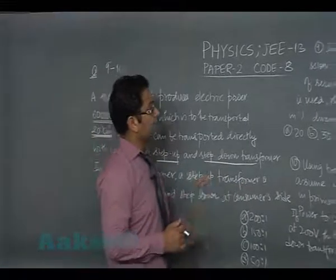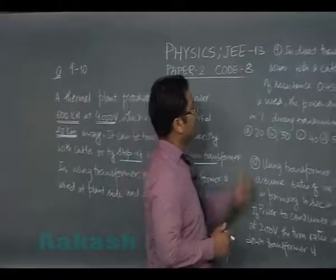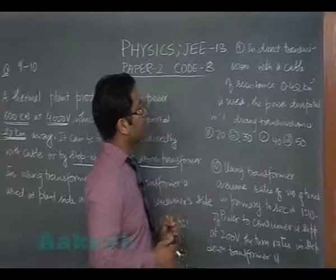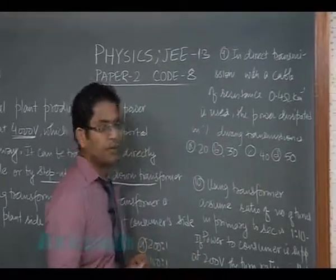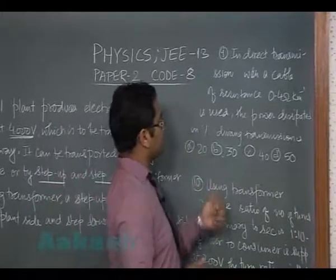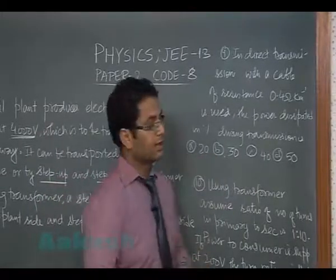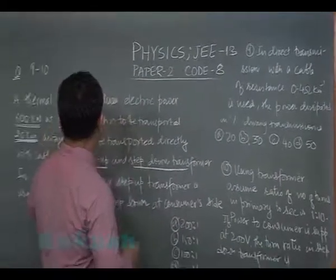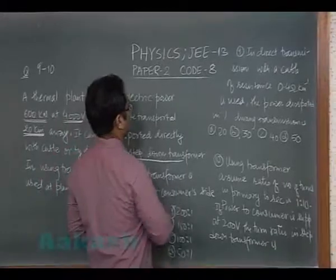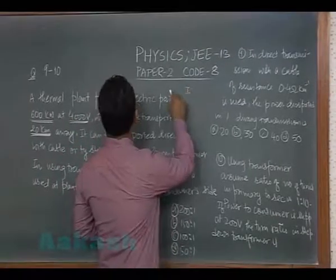Question number nine says in direct transmission with cable of resistance 0.4 ohm per kilometer is used. What is the power dissipated in percentage during transmission? Let's try to see how much is the current which is being produced. The current produced is 600×10³ divided by 4000.